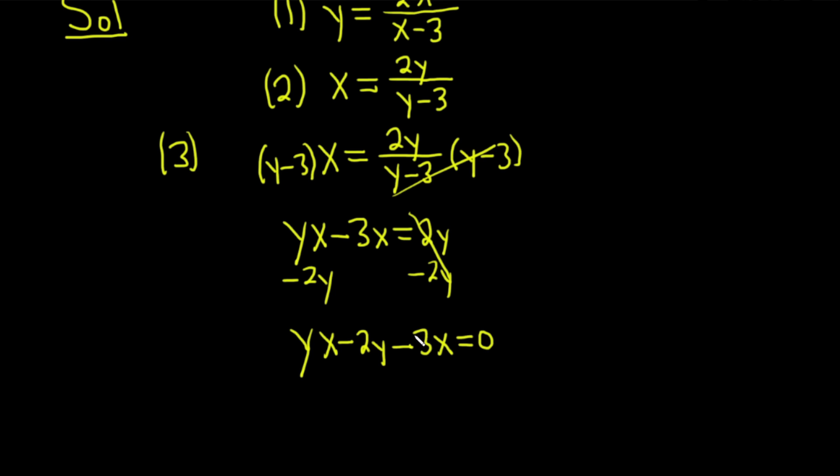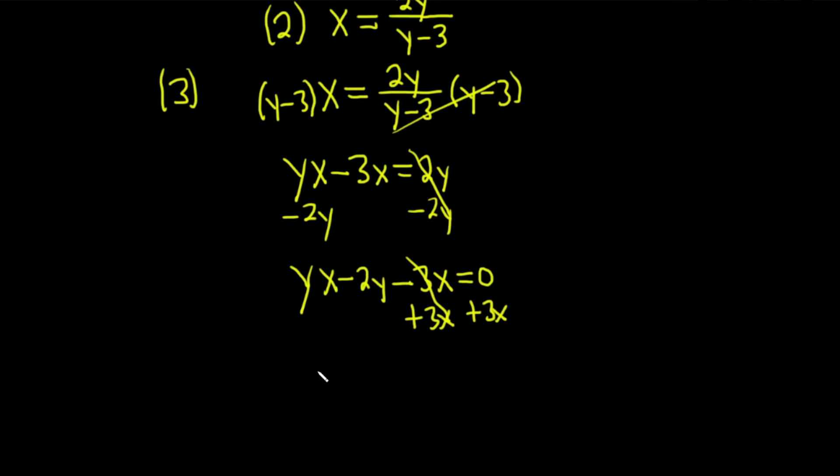So you get yx - 2y - 3x = 0. And you can probably tell what I really want to do with this 3x is I want to add it to the other side. So plus 3x plus 3x. Cancel. So you end up with yx - 2y = 3x.